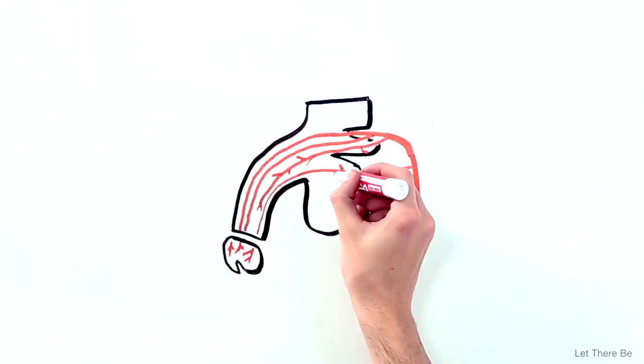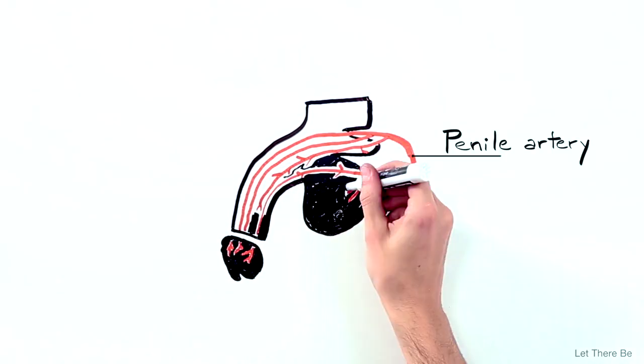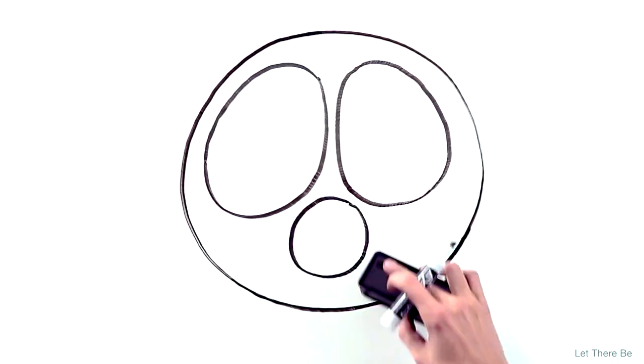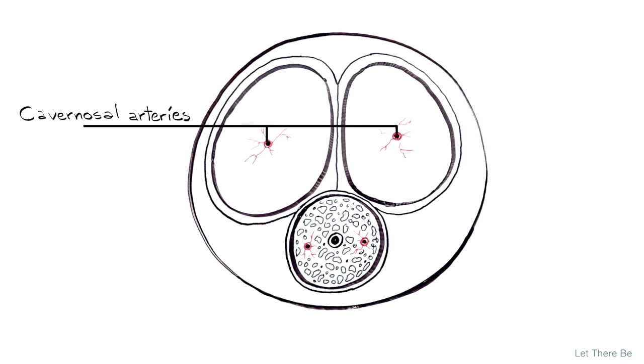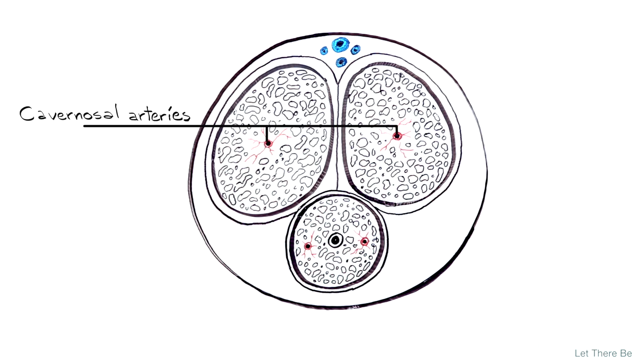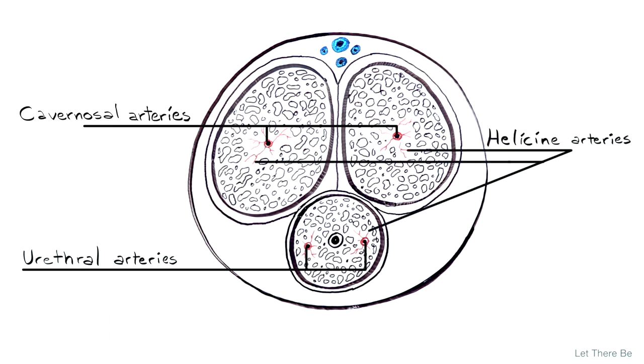Blood is supplied to the penis via the penile artery that splits into cavernosal arteries, which provide blood flow to each corpus cavernosum. The urethral artery provides blood to the corpus spongiosum. Helicine arteries then carry blood throughout the three cylindrical masses.